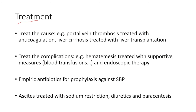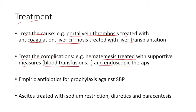Regarding treatment: treat the cause — portal vein thrombosis is treated with anticoagulation, and liver cirrhosis is treated with liver transplantation. Treat the complications: hematemesis is managed with supportive measures like blood transfusions and endoscopic therapy. Empiric antibiotics are given for prophylaxis against spontaneous bacterial peritonitis. Ascites is treated with sodium restriction, diuretics, and paracentesis.